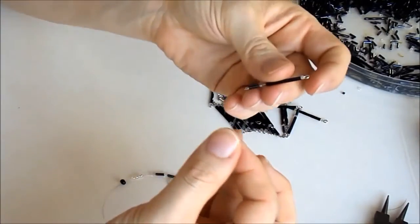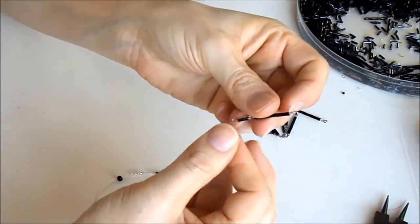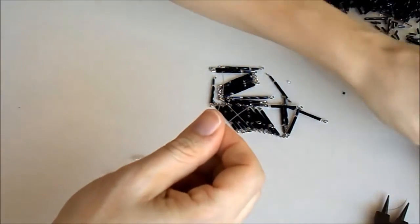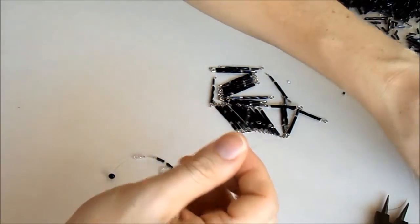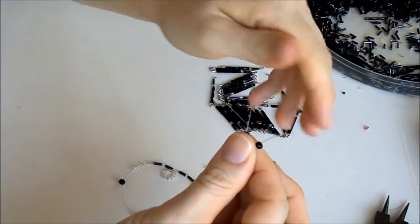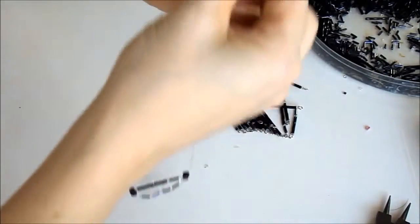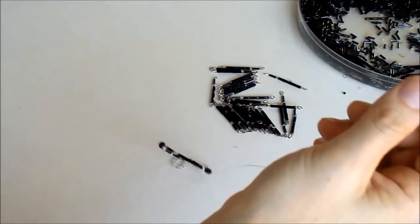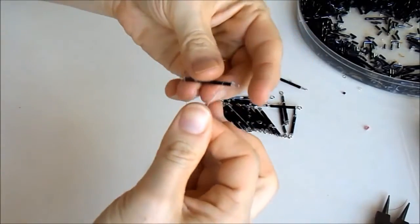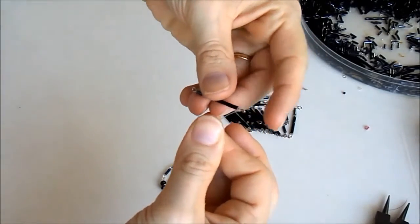Agora eu vou passando pelos alfinetes. Um arco de cá, um de lá. Mais uma miçanga de cada lado. Mais um alfinete. Eu vou colocar o alfinete sempre virado na mesma posição. No caso, o torcidinho está para o lado de cá.